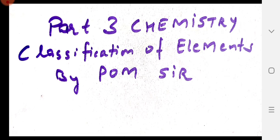P-block is situated at the extreme right of the periodic table. P-block consists of six groups starting from 13, 14, 15, 16, 17, and 18. In this video we will study the P-block, which is divided into these 6 groups from 13 to 18.